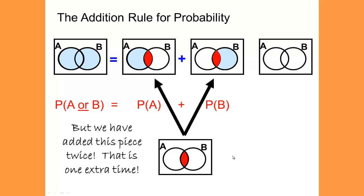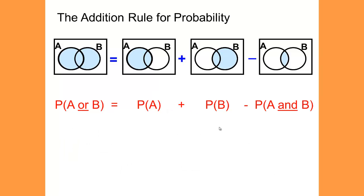And we don't need to add something twice. We have added this piece one extra time. So to get probability of A or B, we will need to subtract off the extra time. We will need to subtract off the overlap one time. So if we let the Venn diagrams represent the probabilities, the probability of A or B is equal to the probability of A plus the probability of B minus the probability of A and B, where we are subtracting off that extra overlap.